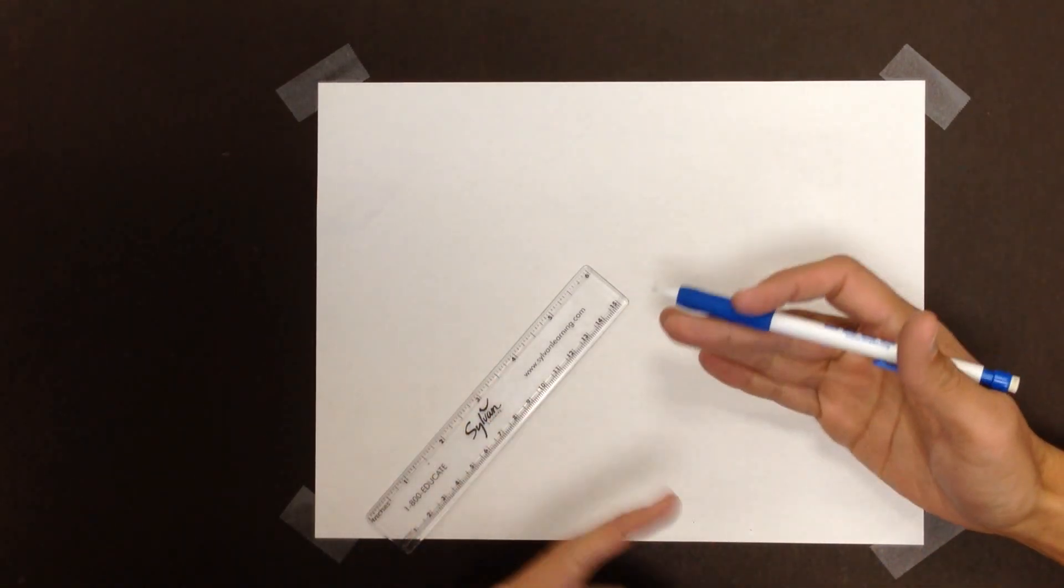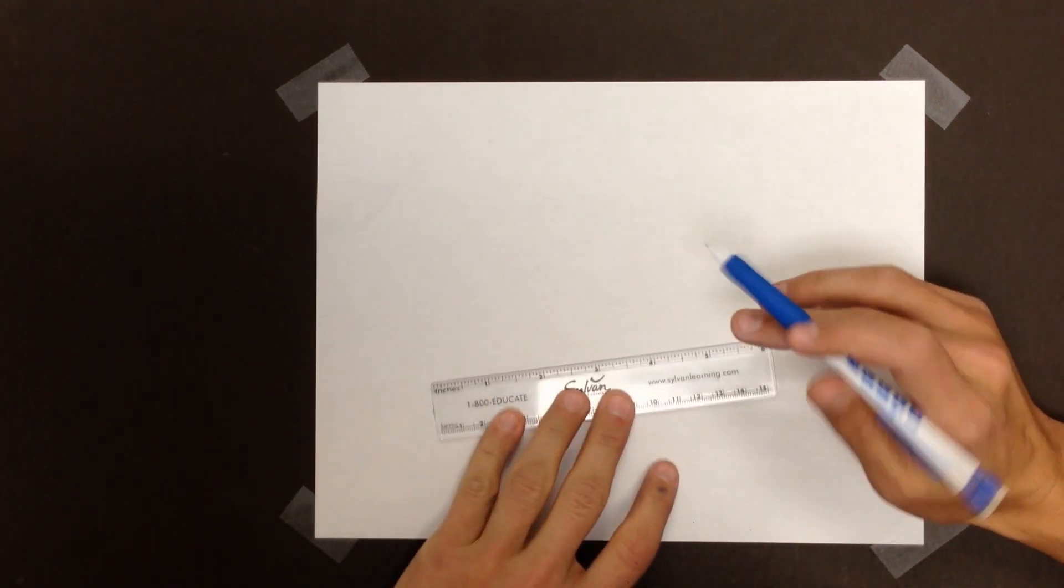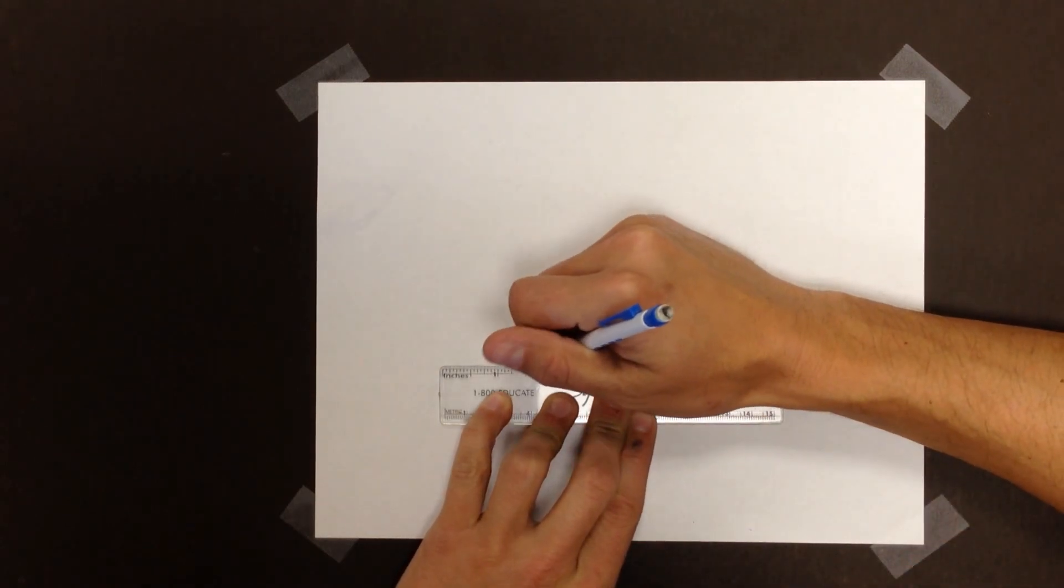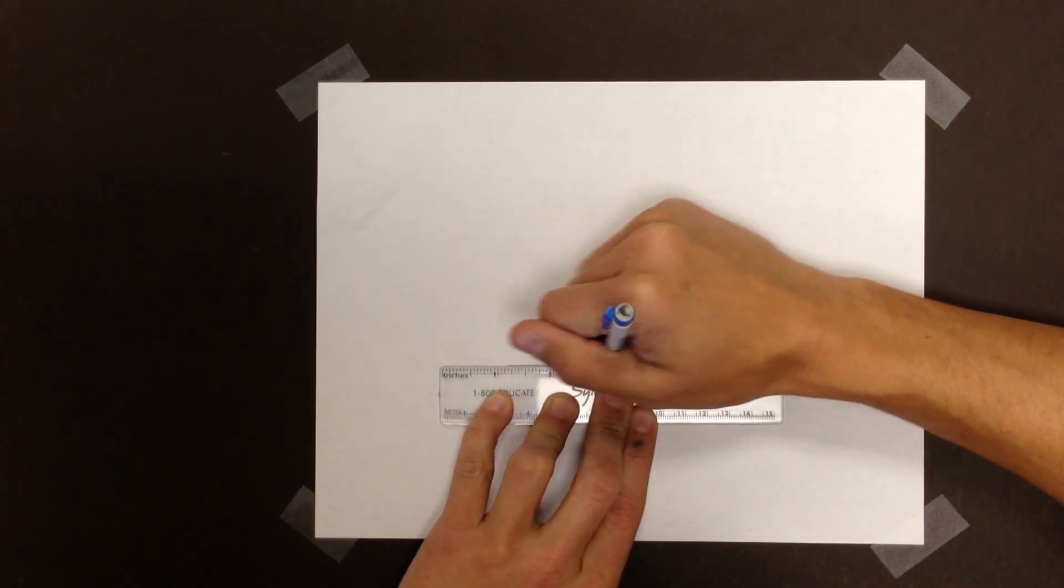It doesn't have to be parallel to the bottom of my piece of paper, but I'm going to try and make it as close as possible. I'm going to make the length about that long and make it kind of dark.